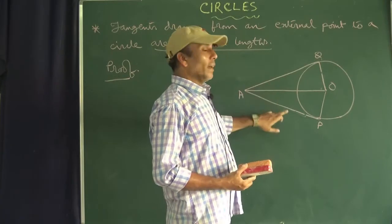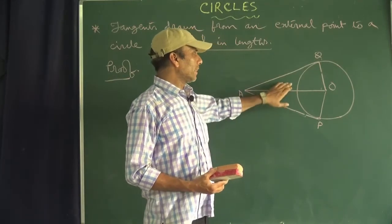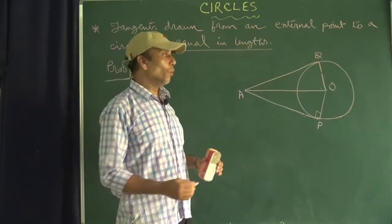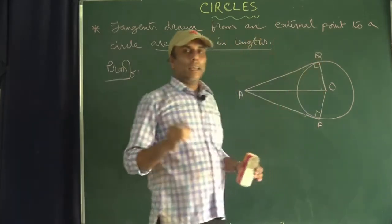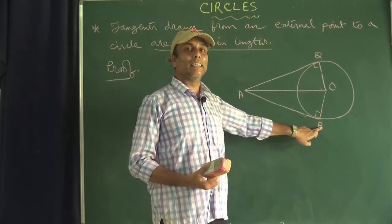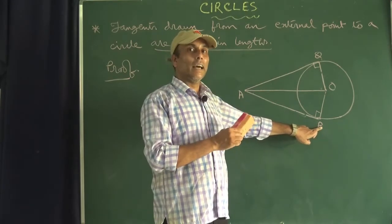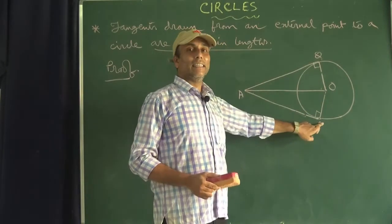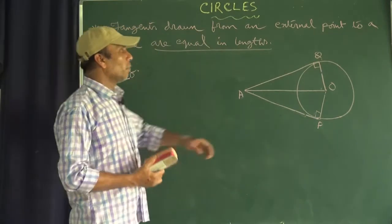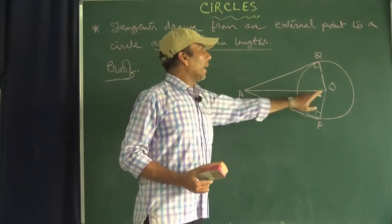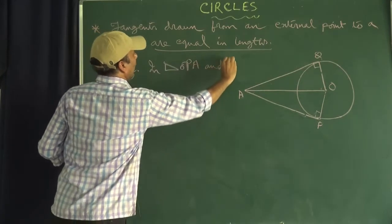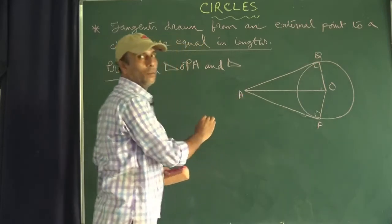To prove that AP and AQ are equal, we will work with two triangles. Have you remembered what will be the measure of angle OPA and angle OQA? If you saw my previous video, I proved there that the radius is perpendicular to the tangent at the point of contact. So this angle's measure is 90 degrees. We will start our work with these two right angle triangles, namely OPA and OQA.